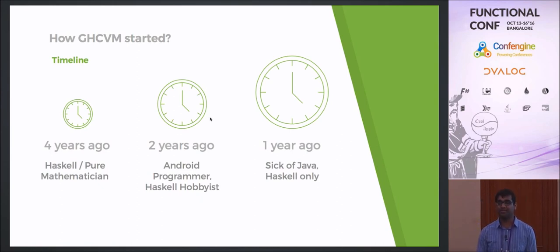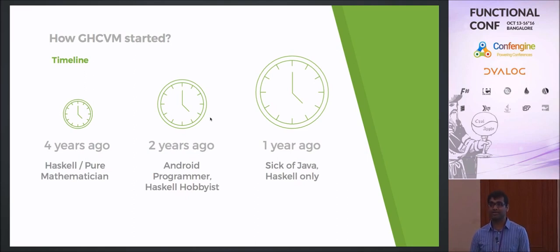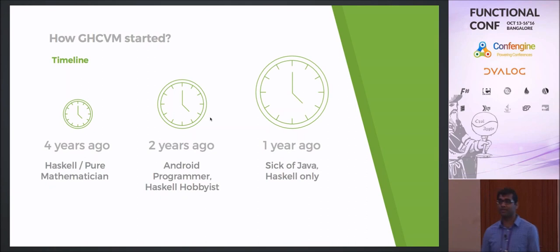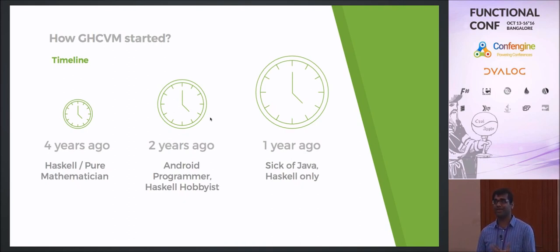I took some time doing lots of Android programming, which gave me access to the Java ecosystem, and I understood the problems there. Haskell has so many features it's almost overwhelming, but later I learned you don't need all those advanced features — the basic core is fine. About one year ago, I reached my saturation point in Java. I'd been working in startups developing back-ends and Android apps, and I really wanted to use Haskell for mobile and other things. That's where I got the idea to get Haskell on the JVM.